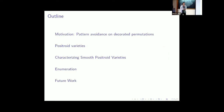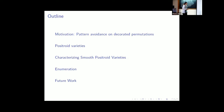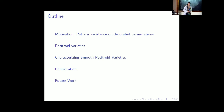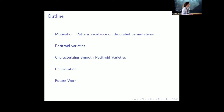The outline of the talk is: first, to discuss the motivation for the problem we are solving. We are interested in pattern avoidance on decorated permutations. Then I'll define positroid varieties — these are relatively new objects in the literature. The main theorems are about characterizing smooth positroid varieties. We have some enumerative results, and I'll end with some open problems.